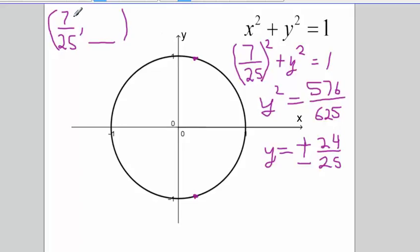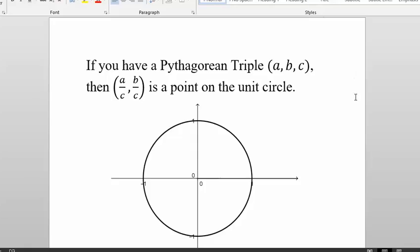The other way to do it is to notice that if I have 7 and 25, this is two of the three members of the Pythagorean triple, with the Pythagorean triple being 7, 24, 25. And then just write down the answer directly. We have a nice generalization that if you have any Pythagorean triple a, b, c, then the ordered pair a over c, b over c is a point on the unit circle.